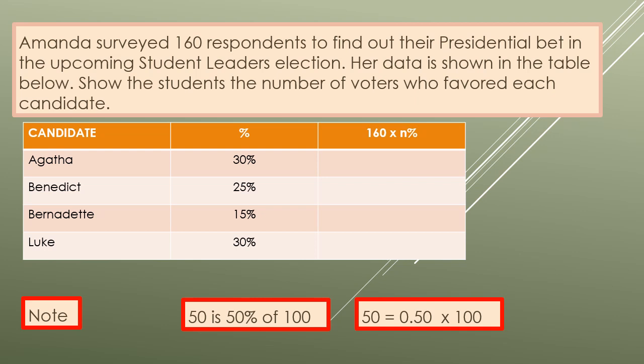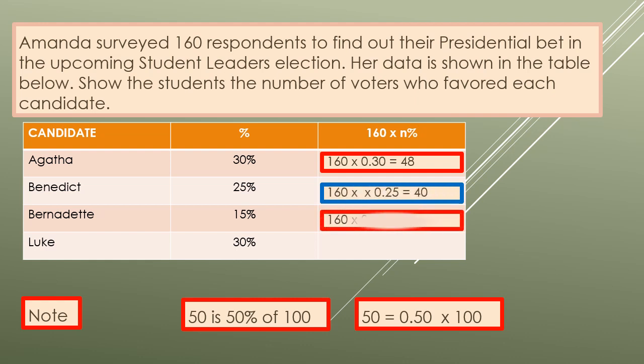How do we answer 30 percent of Agatha's vote from 160 is 48? For all of them, you just multiply the given respondents by the percentage requested. For Benedict, what is 25 percent of 160? That's 40. What is 15 percent of 160? That's 24. And again, 30 percent of 160 is 48.